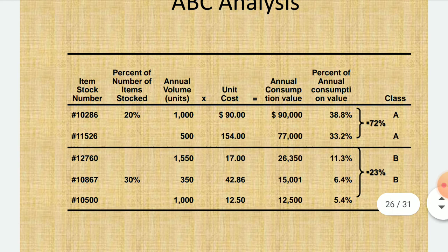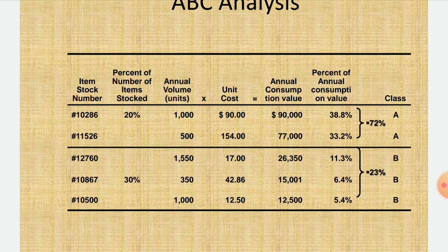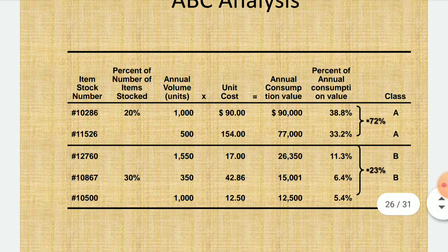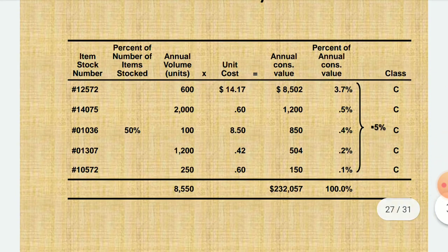The ABC table includes: item stock number, percentage of number of items stored, annual volume in units, unit cost, total cost, and percentage of annual consumption value. Class A items account for approximately 72% of consumption value, Class B accounts for 23%, and Class C accounts for 5%.